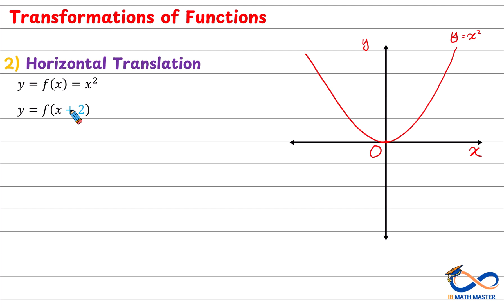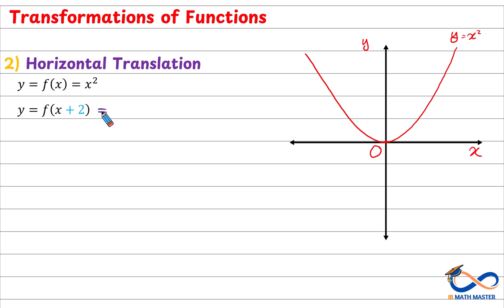In transformations, x always performs in the opposite way of what we think. So someone might say when we add 2 it will move to the right 2 units — but no, it will be to the left, and now we will understand why. Let's find f of x plus 2: since f of x equals x squared, f of x plus 2 will be (x + 2) squared — we replace x by x plus 2.